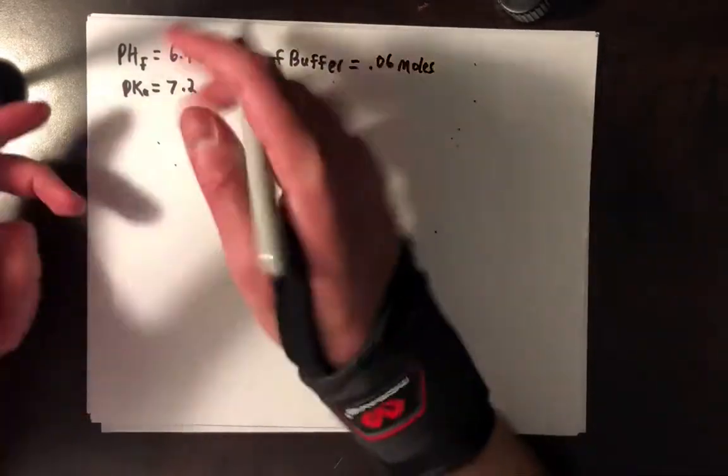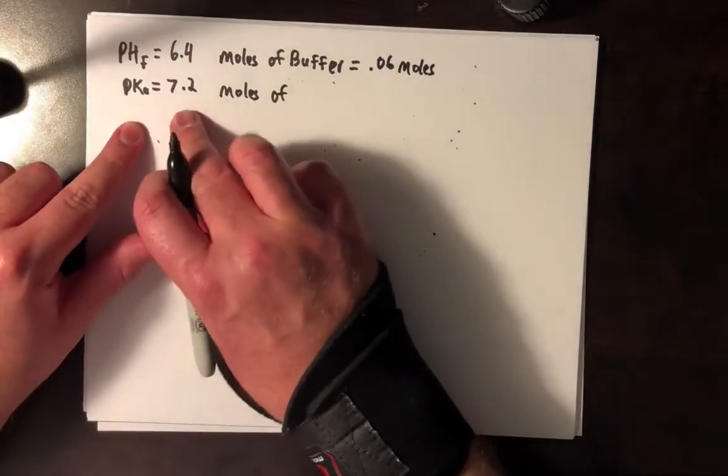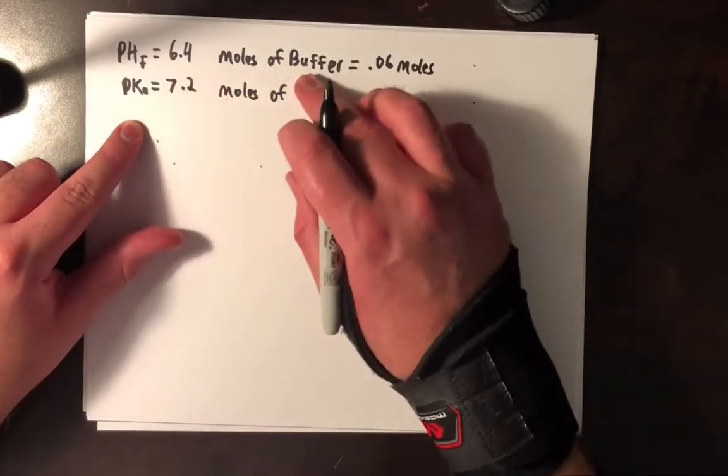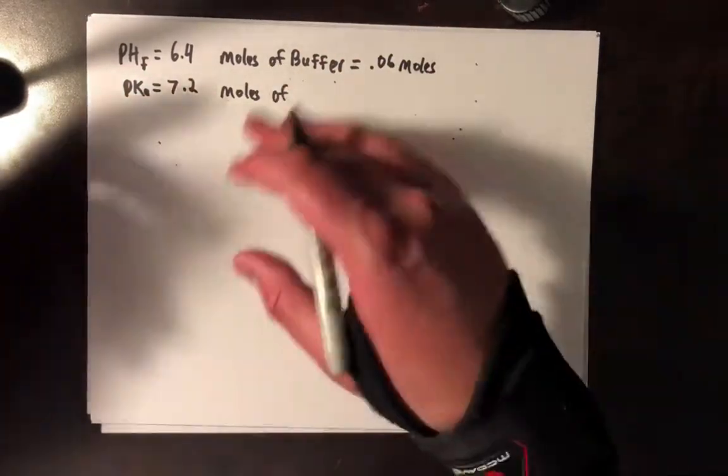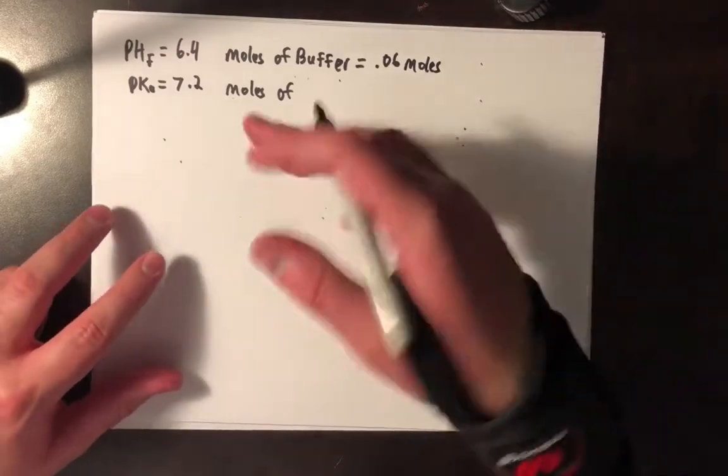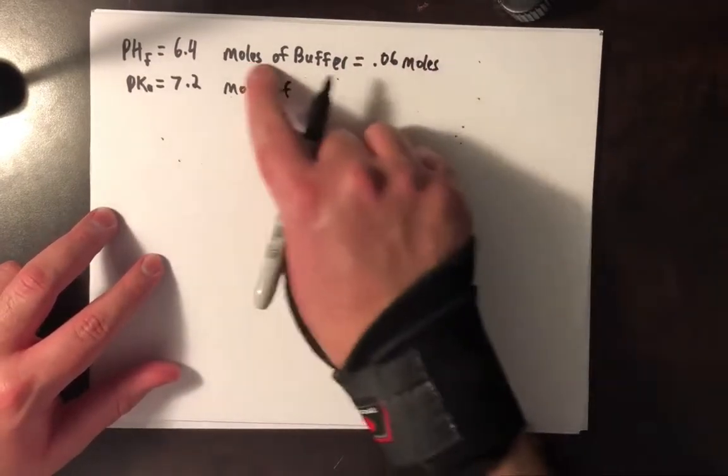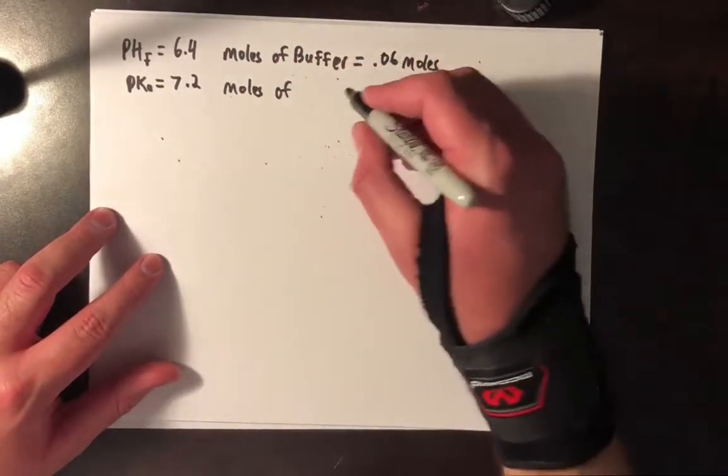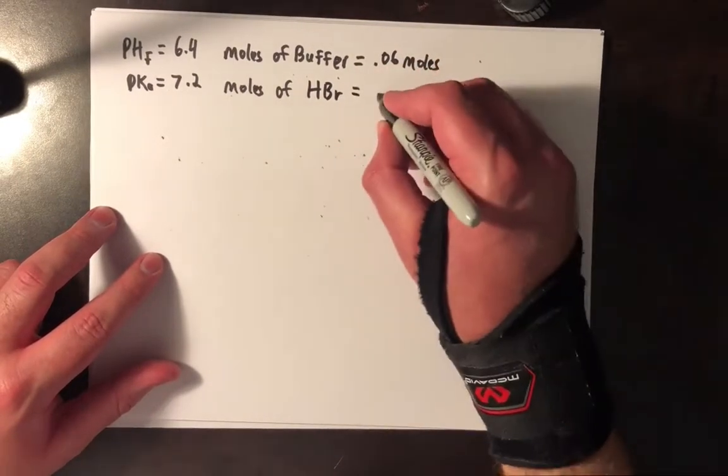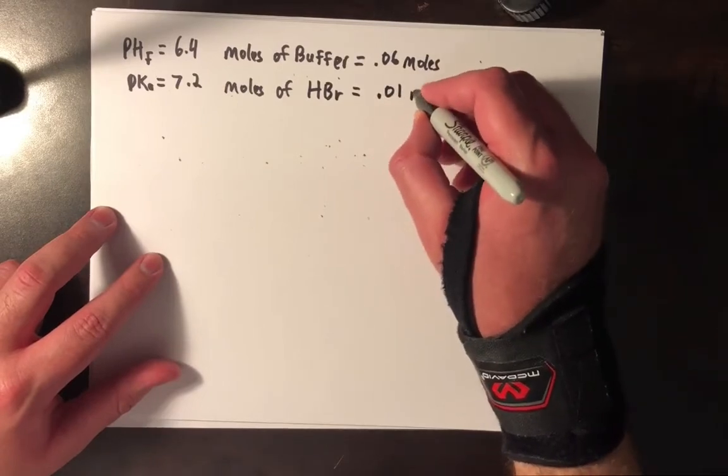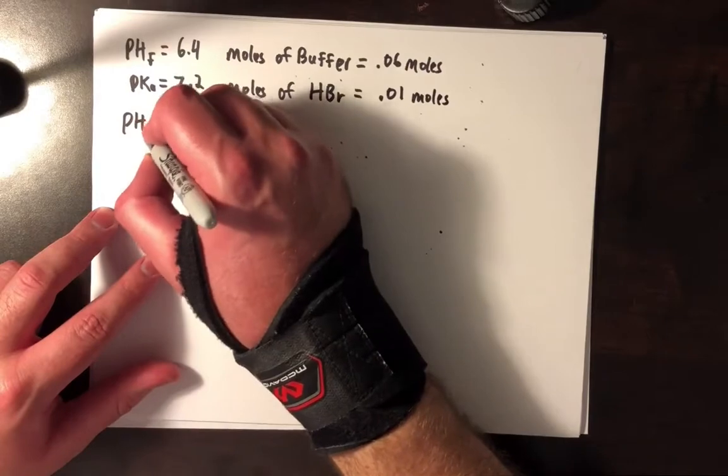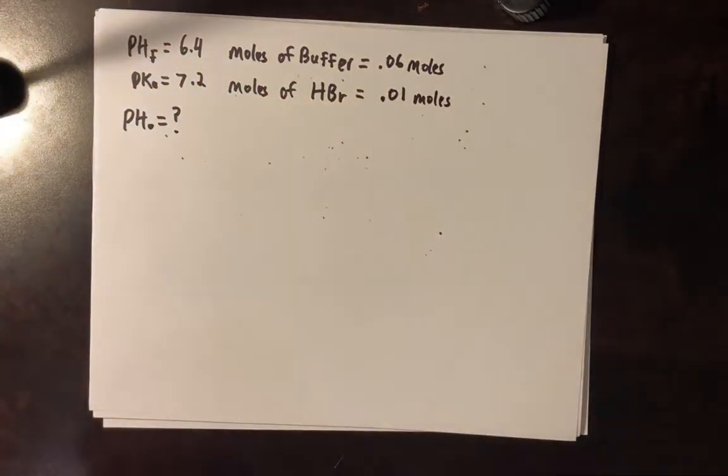You know, you have your final pH of 6.4, your pKa of your acid is like 7.2, you have 0.06 moles of your buffer. They'll usually always give it as volume and ask you to multiply by the concentration, even though that's a useless extra step that I'm just going to skip here. So you have 0.06 moles of your buffer, and let's just say you have a strong acid like HBr, and you have 0.01 moles of that, and you want to know how to calculate the initial pH from that.